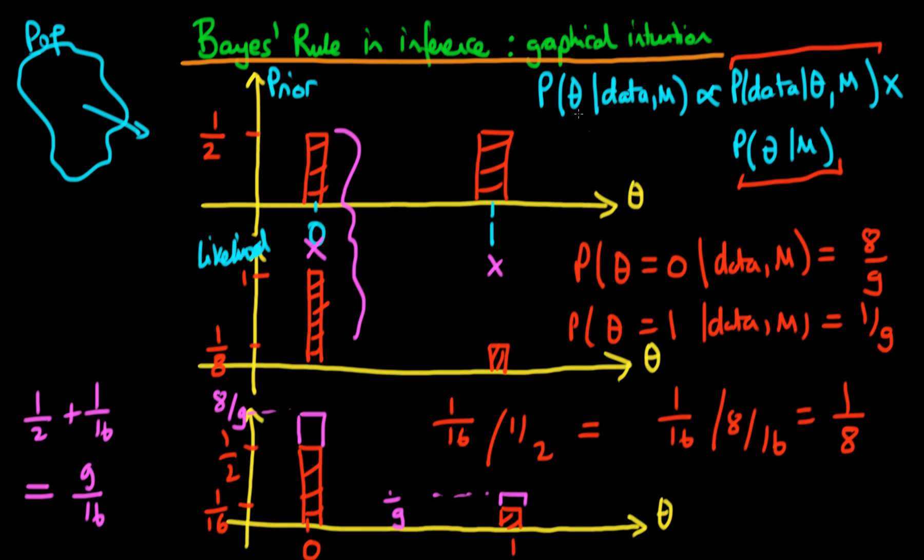But I hope that you'll agree that this graphical intuition is quite a nice way of thinking about things sequentially. We start off with a prior, then we multiply that by the likelihood, and that in turn defines what the posterior probability is.